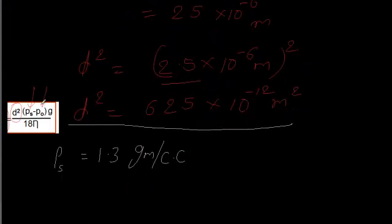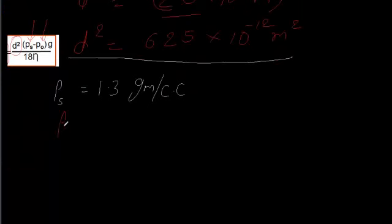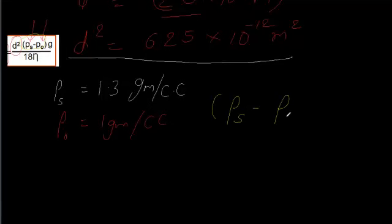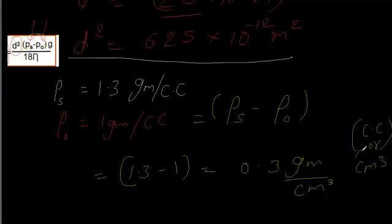We also need the density of the medium. Here the medium is water, and the density of water is 1 gram per centimeter cubed. We need to find the difference: density of powder minus density of water, which is 1.3 minus 1 equals 0.3 grams per centimeter cubed.